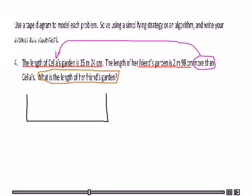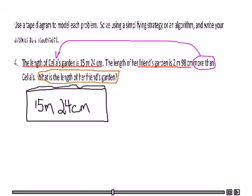I'm going to draw a tape diagram of Celia's garden which is 15 meters and 24 centimeters. And it says the length of her friend's garden is 2 meters and 98 centimeters more than Celia's. So what I would have to do to show that, let me just go ahead and do this on top. I'm going to have to add to Celia's garden because her friend's garden is 2 meters and 98 centimeters more.